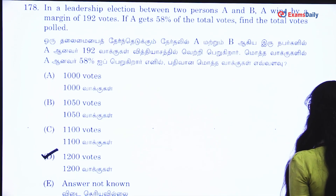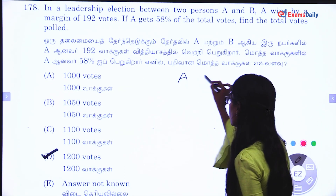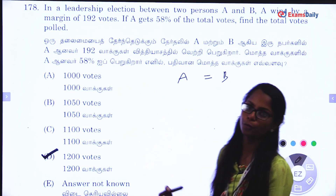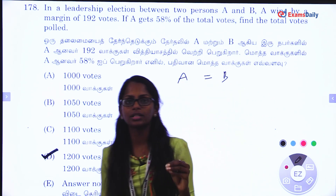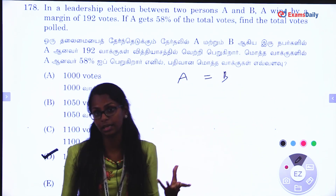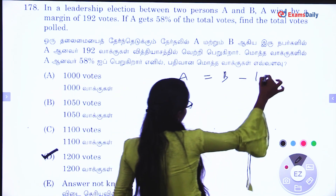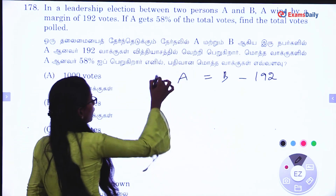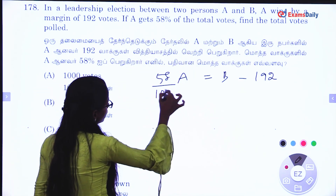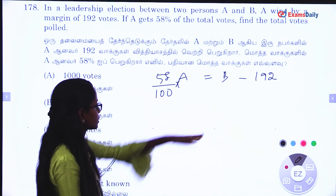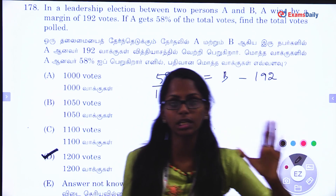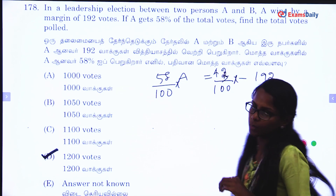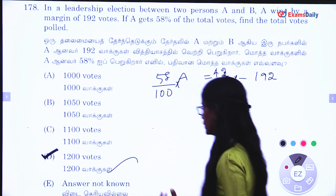Next question. In a leadership election between two persons A and B, A wins by a margin of 192 votes. If B gets 50% of the total votes, let's say x, the balance is 42%. So 42% gives x minus 192. If we solve for x, the value is 1,200.